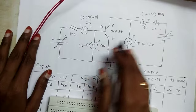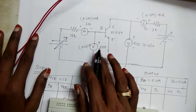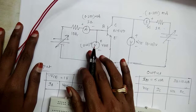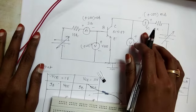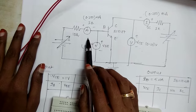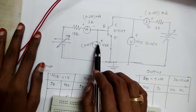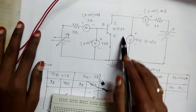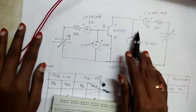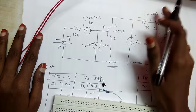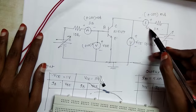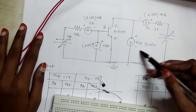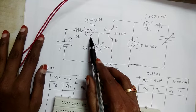We need to perform both input and output characteristics of the CE configuration. Input characteristics are the curve of VBE versus IB — to plot this, we maintain VCE constant. Output characteristics are the curve of VCE versus IC — to plot this, we maintain the input current IB constant.